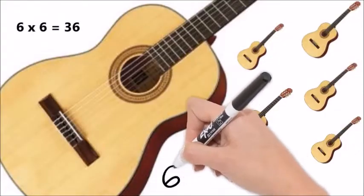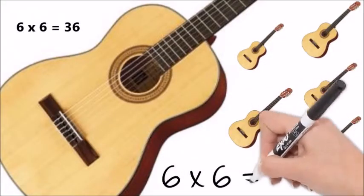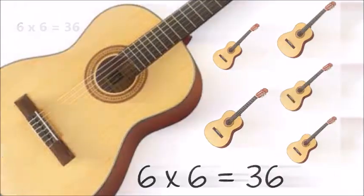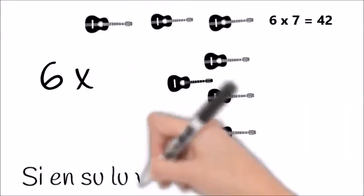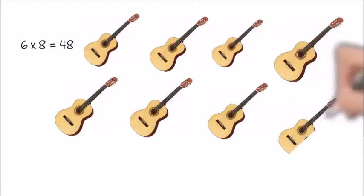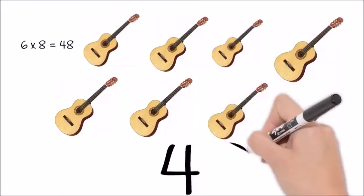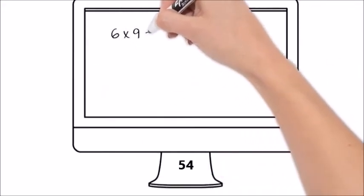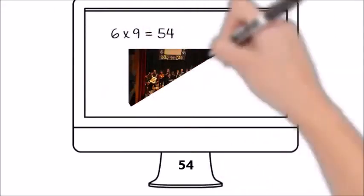Si fueran seis guitarras, treinta y seis cuerdas. Si en su lugar son siete, cuarenta y dos. Ocho, cuarenta y ocho tiene la valla. Nueve, cincuenta y cuatro, una rondalla.